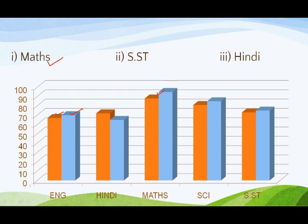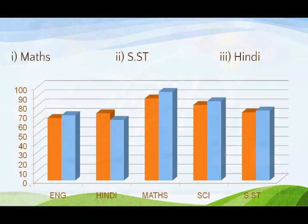Looking at the double bar graph, improvement hoi hai Maths aur Social Studies mein. Social Studies mein sabse kam improvement hoi hai. Has the performance gone down in any subject? Yes — Hindi mein performance kam hoi hai. Iss tarah se hum bacche ke improvement aur kahan wo kam gaya hai, dono pata kar sakte hain. Thank you.